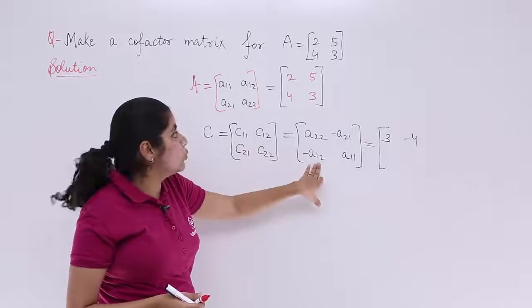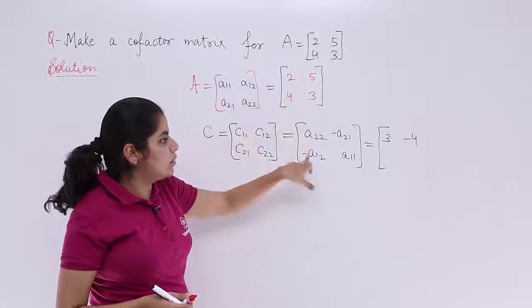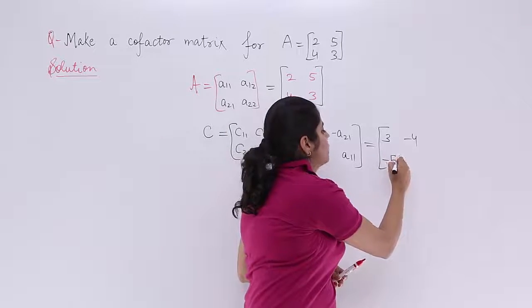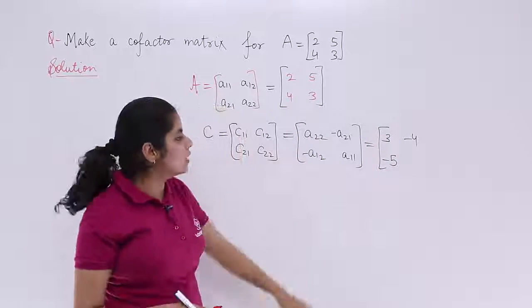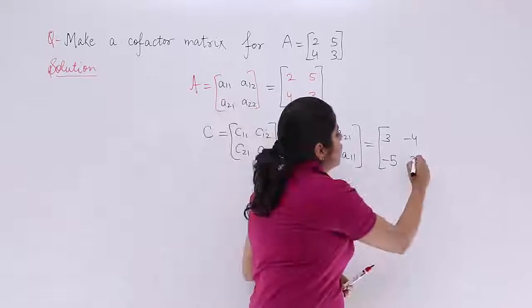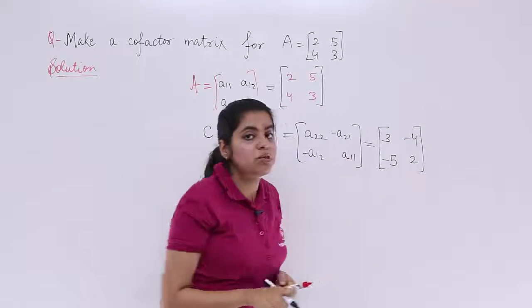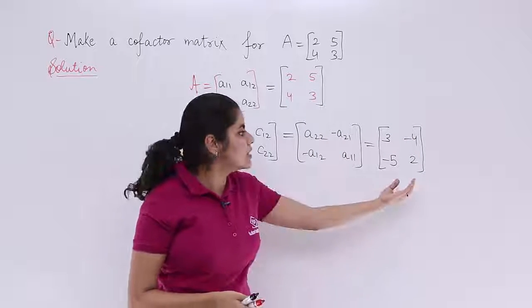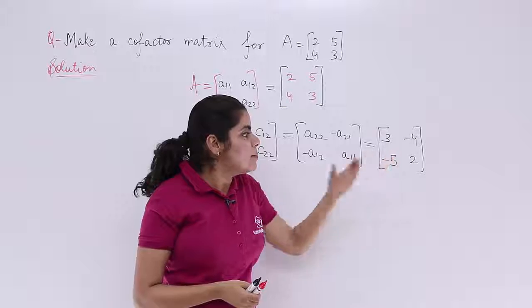What about A12? A12 is 5. Minus should be there, so minus 5. Last but not the least, what about A11? A11 means the first element which is 2. So the cofactor matrix which was asked for this question has the answer 3, minus 4, minus 5, 2.